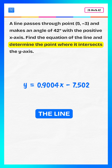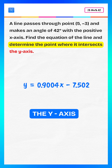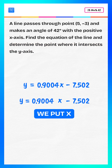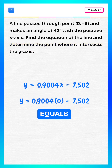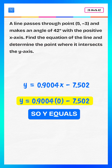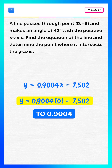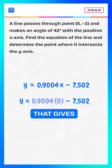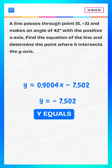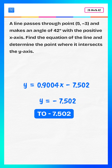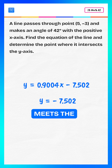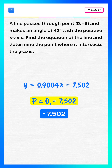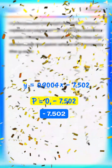Now we find where the line intersects the y-axis. To do that, we put x equals 0. So y equals 0.9004 multiplied by 0, minus 7.502. That gives y equals negative 7.502. Therefore, the point where the line meets the y-axis is (0, negative 7.502).